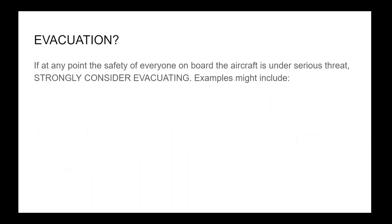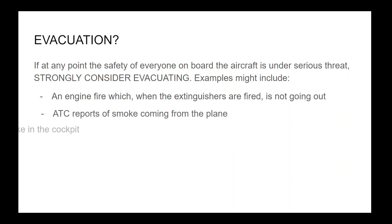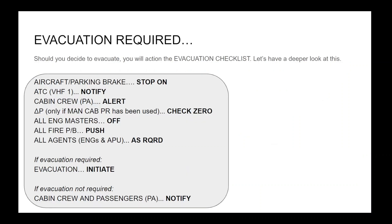If at any point the safety of everyone on board is under serious threat, strongly consider evacuating. Examples might include an engine fire which, when the extinguishers are fired, is not going out; ATC reports of smoke coming from the plane; reports of smoke in the cabin; or smoke in the cockpit. If you don't need to evacuate, the captain will make the PA 'cabin crew, normal operations' — this is important as they will be ready to evacuate until that PA is made. If an evacuation is required, the crew shall action the emergency evacuation checklist. Despite this being a read-and-do checklist, it is surprisingly easy for crew to make mistakes.